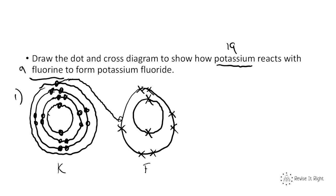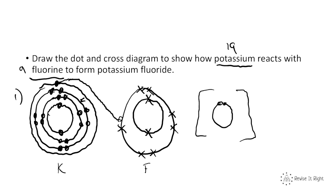Now we need to draw our ions to show what happens in this reaction. If potassium has lost 1 electron, we only draw its next outer shell, which now has 8 electrons. We draw those 8 electrons as dots. Because it has lost 1 electron, it now has a +1 charge.